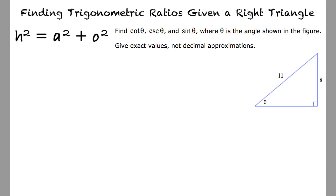h squared equals a squared plus o squared. Substituting the given values into the equation yields a squared equals 11 squared minus 8 squared, which simplifies to a